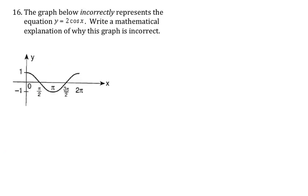Number 16: the graph incorrectly represents y = 2·cos(x). From the given equation, the amplitude should be 2. But looking at the graph, the amplitude is simply 1 — from the middle I'm going up and down by only one unit. That's why this graph is not correct.